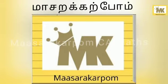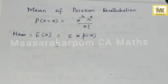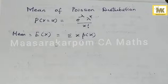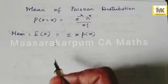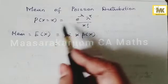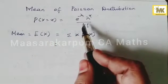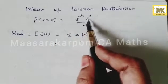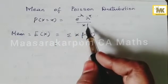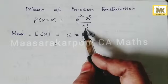Welcome to my channel, Masarakarpom. Derive mean and variance of the Poisson distribution. For the Poisson distribution, the probability function is p(x) = e^{-λ} · λ^x / x!.